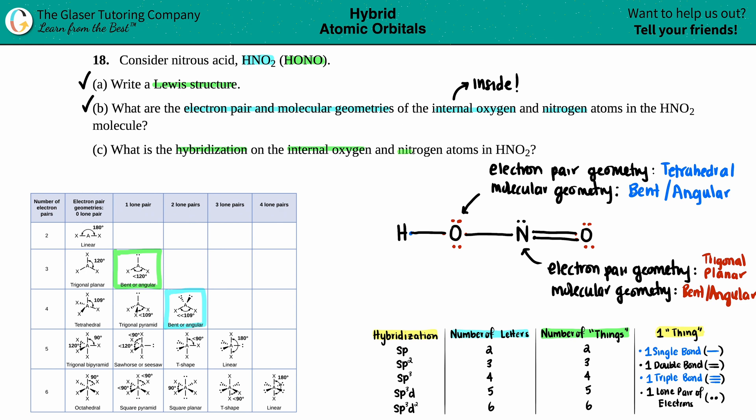And then what classified as one thing? Well, one thing is either one single bond. One thing is one double bond. So even though you have two lines here, it's still classified as one thing. I got one triple bond. So even though there's three lines, it's still one thing and one lone pair.